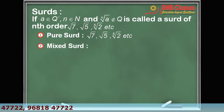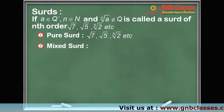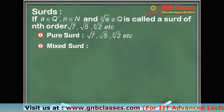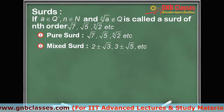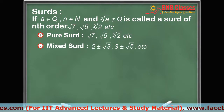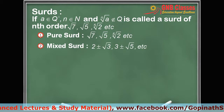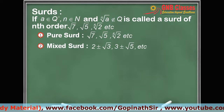The next is a mixed surd. If a is a rational number and root b is a surd, where a and b are both rational numbers, then a ± root b is called a mixed surd. For example, 2 ± root 3, 3 ± root 5, etc.